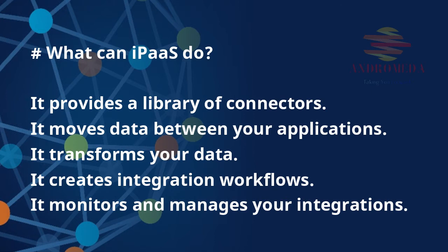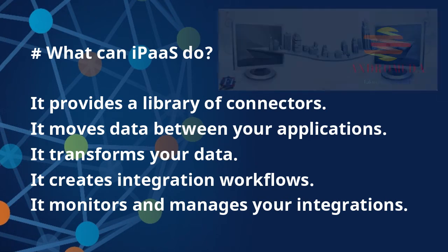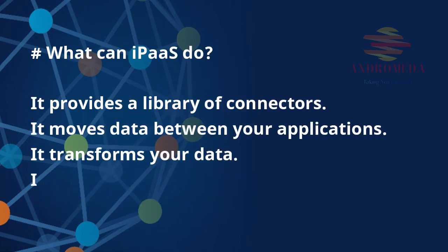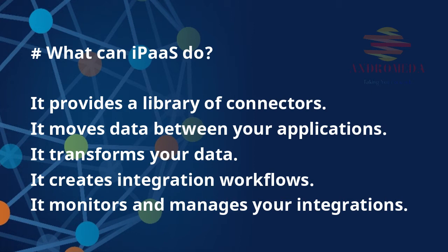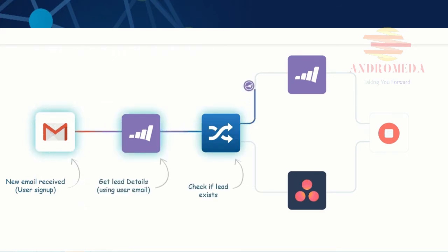Second, it moves data between your applications. An iPaaS moves data between your source and target applications using connectors. Your applications can both take in and push out the data as it flows from source to target application. It also transforms your data — your applications need data in specific formats in order to process it accurately. iPaaS maps and transforms data to match the requirements of both your source and target applications. Think of iPaaS as a universal translator of your data.